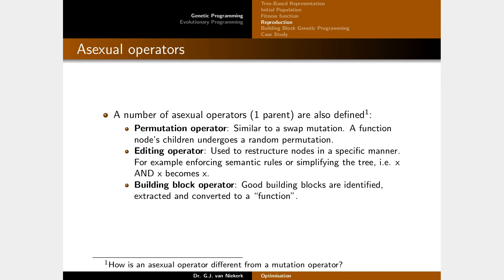Asexual operators — using only one parent — are also defined. The subtle difference from mutation is that with mutation the operator is applied to a child after crossover and only the mutated individual remains. With an asexual operator, you keep both the parent and the child, making a copy of the parent first, and then replacing either the parent or the child based on fitness or some other replacement strategy.